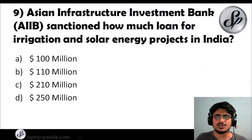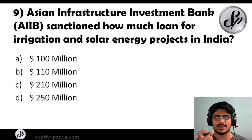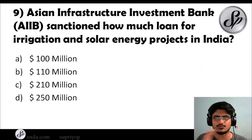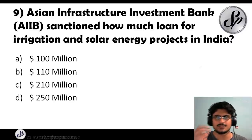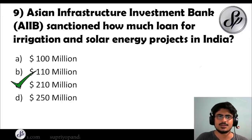Question nine: Asia Infrastructure Investment Bank (AIIB) sanctioned how much loan for irrigation and solar energy projects in India? For these types of questions where a multilateral body gives a loan to India, you must remember the figures — always note them down. The answer is $210 million.